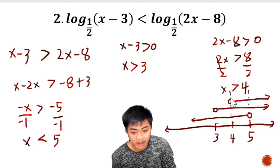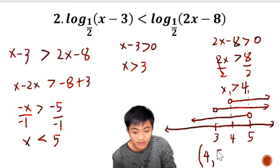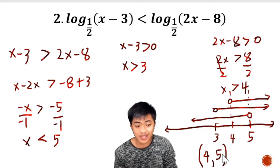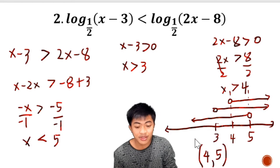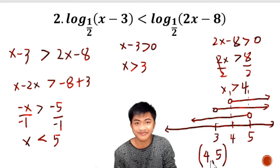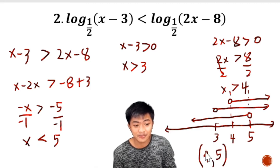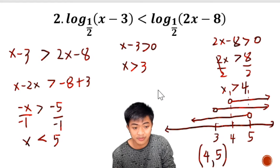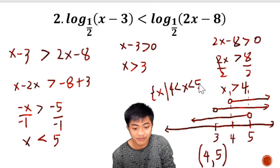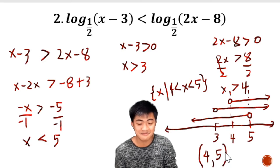The intersection is the region from 4 to 5. Since both circles are open, 4 and 5 are not included, so we use parentheses on both sides. The solution set in interval notation is (4, 5). In set-builder notation, this is the set of all x such that x is greater than 4 and less than 5. Interval notation is shorter and more convenient.